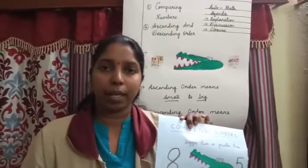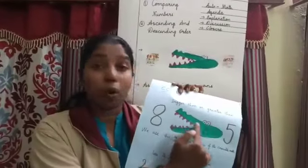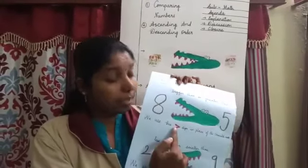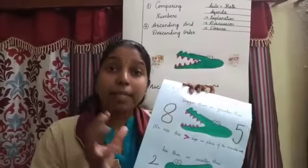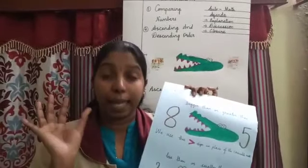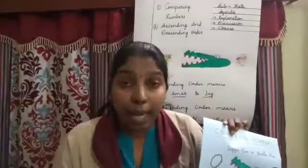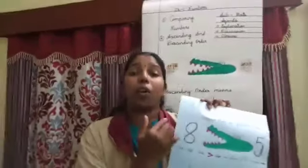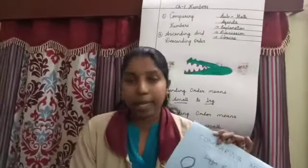Okay children. So, when you are comparing numbers, you will not draw the crocodile's face — you will draw this sign. Understood, children? So this example showed you how to compare numbers. Whichever side has the bigger number, the crocodile opens its mouth toward it. Understood, children?